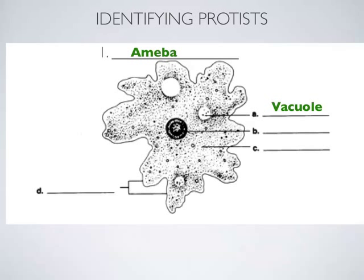What about B? That's the nucleus. And C? That's the cytoplasm. And then what do we call the extensions — the cytoplasm oozing forward? Pseudopods. Those are the parts of an amoeba that we need to know. Pretty simple.